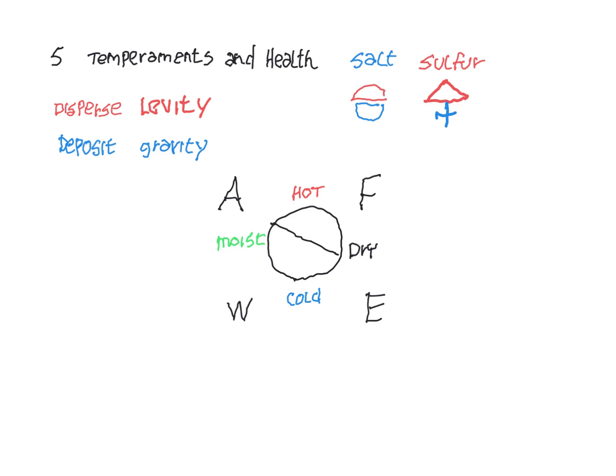In the past videos we've described the relationship between the elements and the temperaments. The four elements: earth is cold and dry, water is cold and moist, air is moist and hot, and fire is hot and dry.